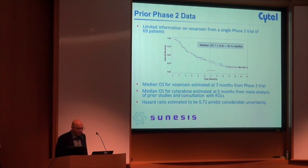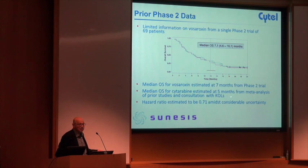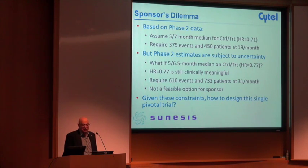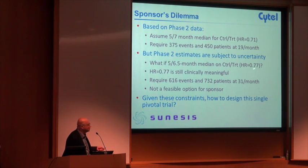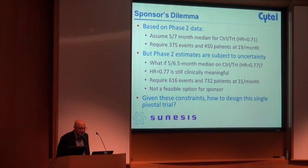After a lot of discussion, meta-analyses, and discussions with key opinion leaders, it was decided to design this trial to detect a hazard ratio of five versus seven months, or a hazard ratio of 0.71. The sponsor's dilemma is that there's a lot of uncertainty about this hazard ratio. It could be 0.71, but it could easily be five versus 6.5, a hazard ratio of 0.77. In one case, you can get away with 450 patients; in another, you need 700 patients.